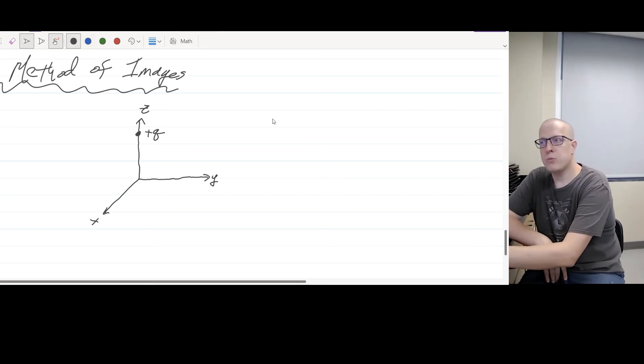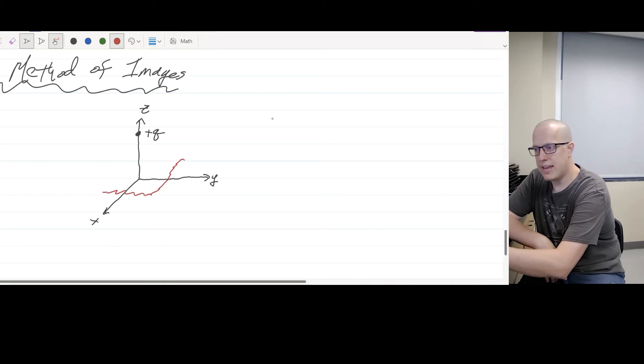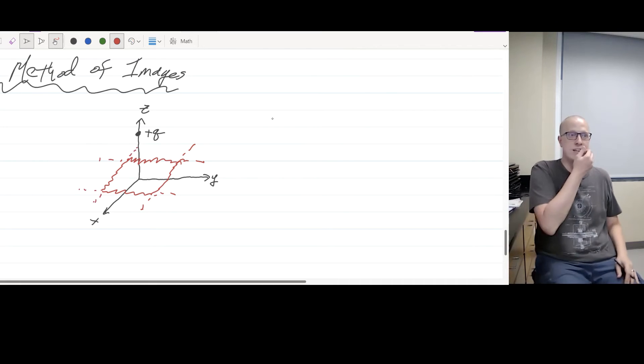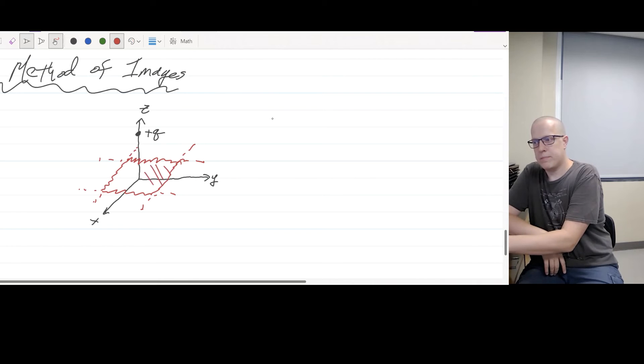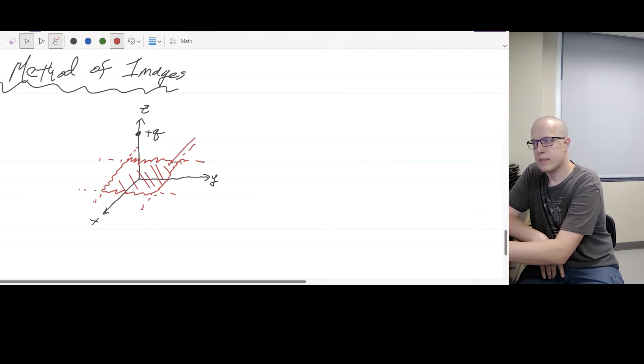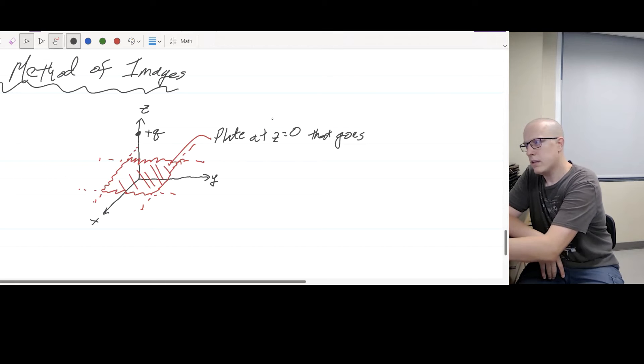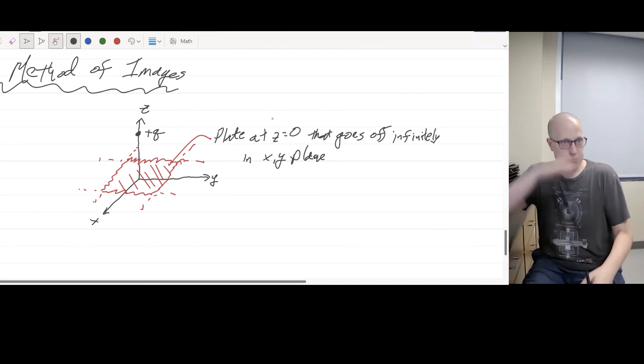However, what we're going to introduce, which would make this problem trickier is a plate. And this plate sort of goes off in all directions. So imagine sort of at Z is equal to zero. There is this plate at Z equals zero that goes off infinitely in the X and Y plane. So I just have a sheet that goes on forever in the X, Y plane, sort of at Z equals zero.